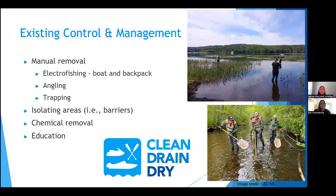Some of the existing control and management practices include manual removal — things such as electrofishing, angling, and trapping. If a species is identified in an area early on, you can also isolate the area to prevent spread using barriers placed upstream and downstream or at inflows and outflows. There are also chemical removal methods, which are less often used. All of these typically come with some educational aspect, as there are many campaigns targeting the general public on how they can reduce the spread of invasive species.